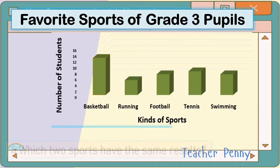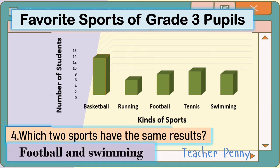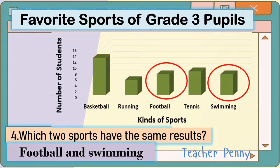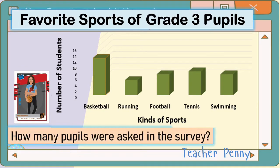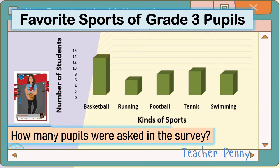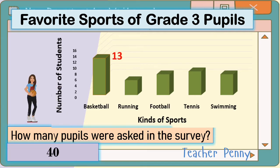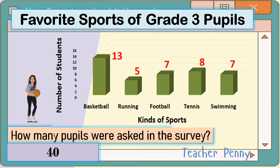For number 4: which two sports have the same results? The answer is football and swimming. Next question: how many pupils were asked in the survey? The answer is 40. All you have to do is add 13, 5, 7, 8, and 7.